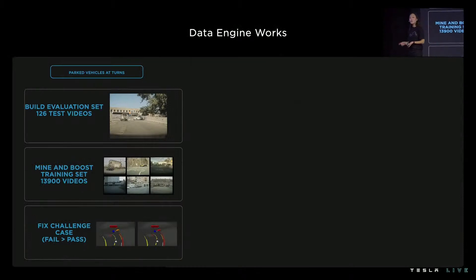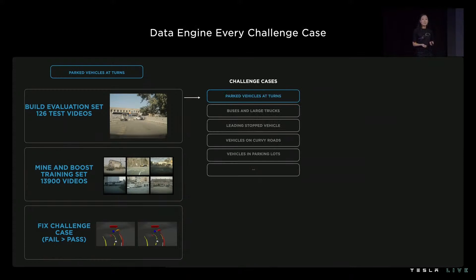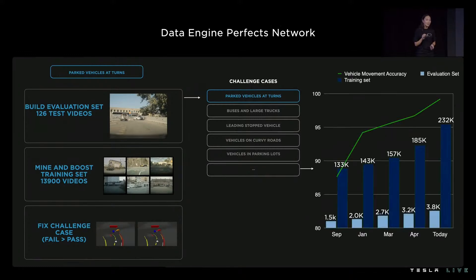We just showed you the data engine loop for one challenge case, namely these parked cars at turns, but there are many challenge cases even for one signal of vehicle movement. We apply this data engine loop to every single challenge case we've diagnosed, whether it's buses, curvy roads, stopped vehicles, or parking lots. And we don't just add data once — we do this again and again to perfect the semantic. In fact, this year we updated our vehicle movement signal five times, and with every weight update trained on the new data, we push our vehicle movement accuracy up and up.